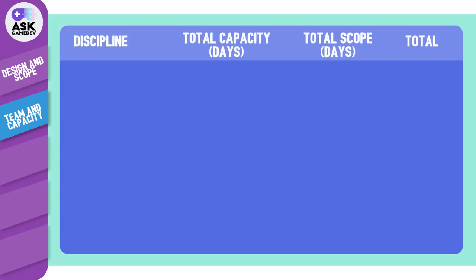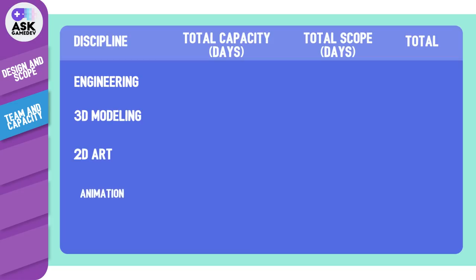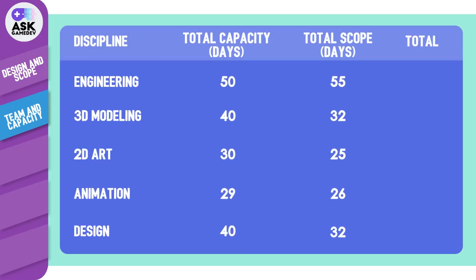Typical discipline categories might include engineering, 3D modeling, 2D art, animation, or design. You will then take the anticipated scope and calculate it as a percentage of the capacity. You'll want to see your scope at something less than 100%, given that your staff will inevitably miss some development time due to unforeseen commitments or sick time. If your scope is greater than 100% of capacity, then you'll either have to reduce scope or add more resources to your team.